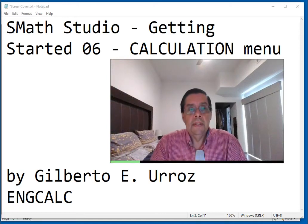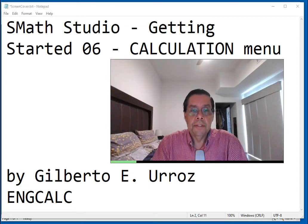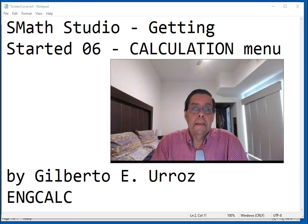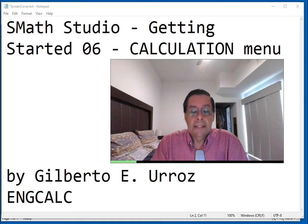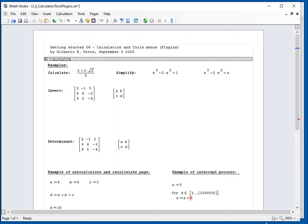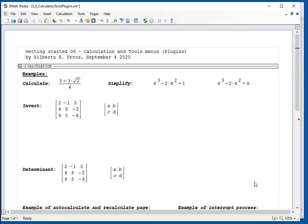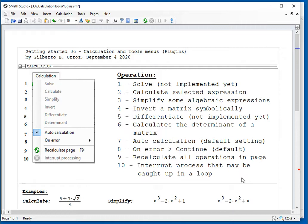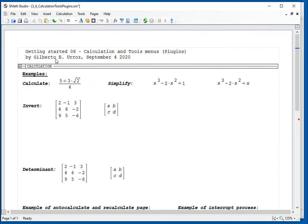Welcome again to another video of the Getting Started series for SMath Studio. I'm going to present operations regarding the calculation menu. For that purpose, I'm going to use this file. This is a SMath Studio file that I'm going to expand a little bit for size and show you the different options for the calculation menu. They're pretty straightforward, so I'm going to close this area and show you calculation.